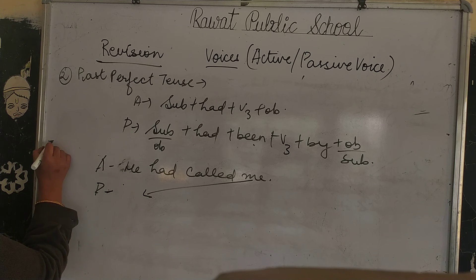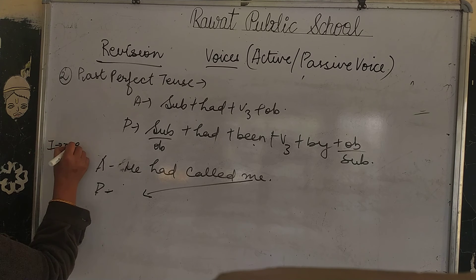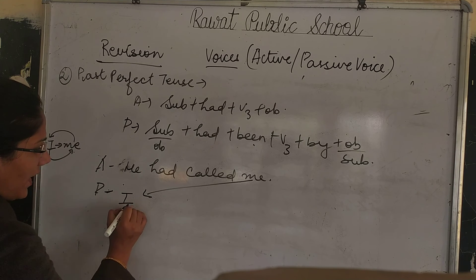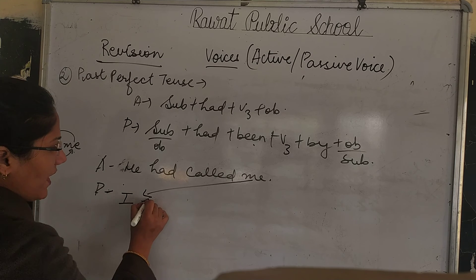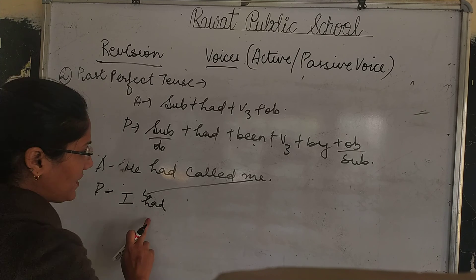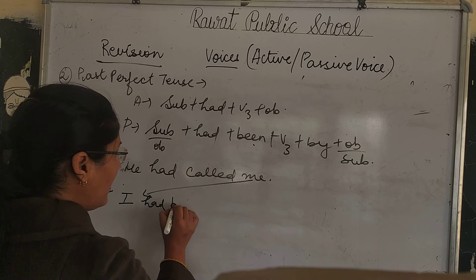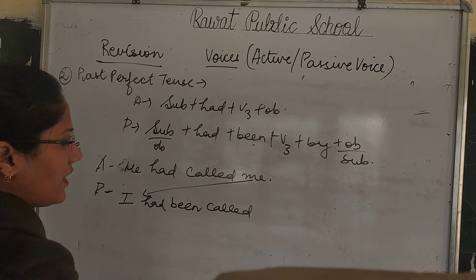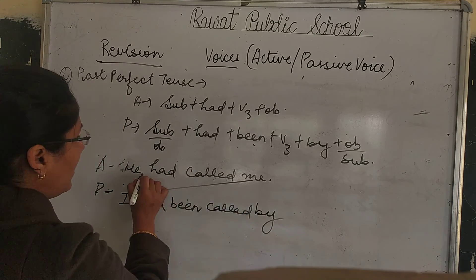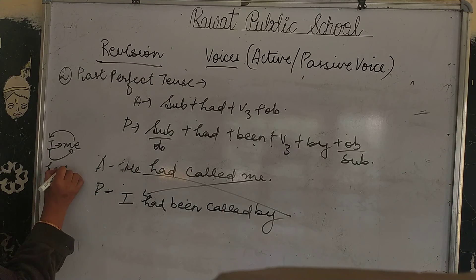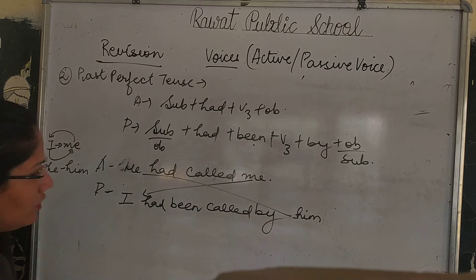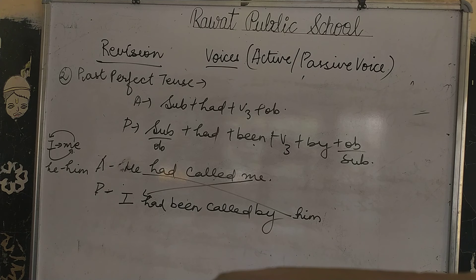When we have a pronoun like 'me' as object becoming subject, 'me' changes to 'I'. 'I' is singular. Then we use 'had been'. The verb third form 'called' remains the same. Then 'by', and the subject 'he' changes to 'him'. So the passive sentence becomes: 'I had been called by him.'